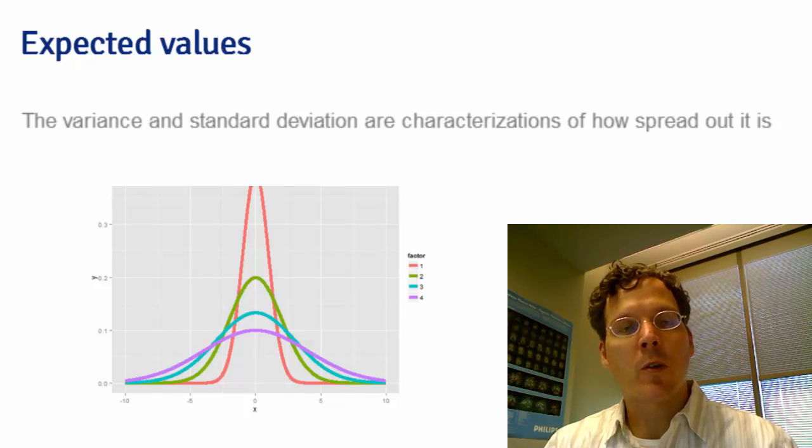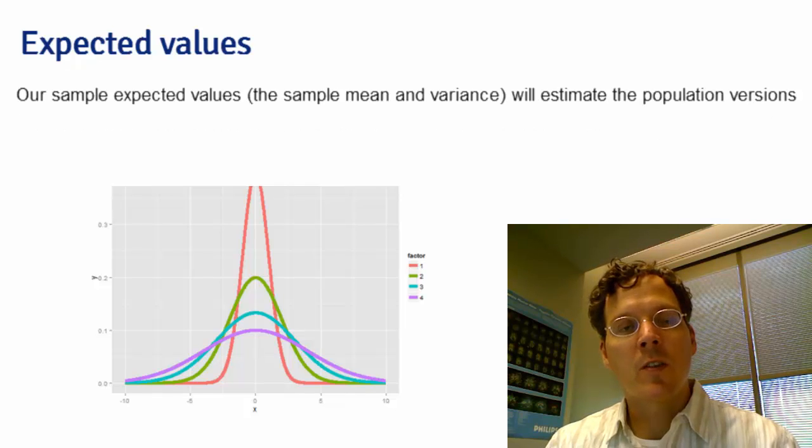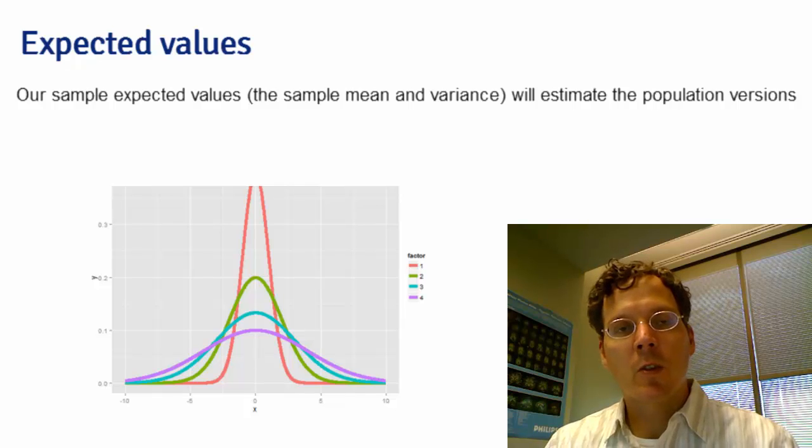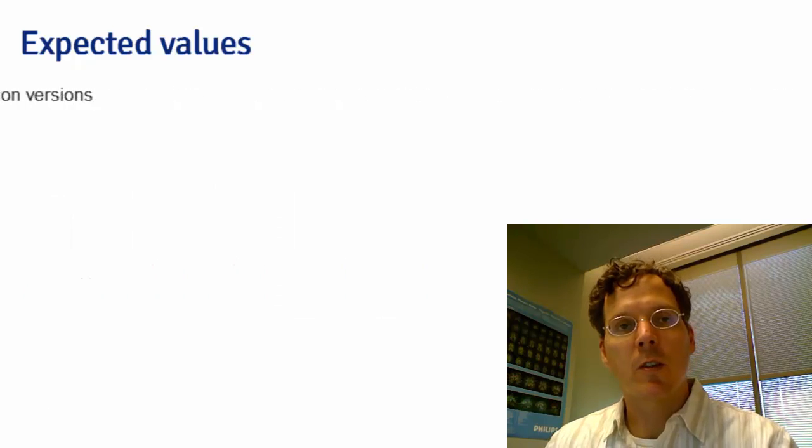Just like the sample quantiles estimated the population quantiles, the sample expected values will estimate the population expected values. The sample mean estimates the population mean, the sample variance estimates the population variance, and the sample standard deviation estimates the population standard deviation.